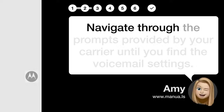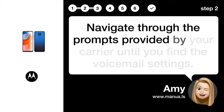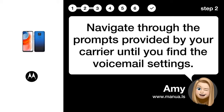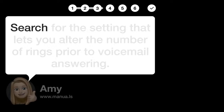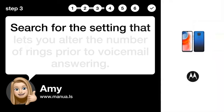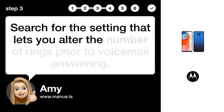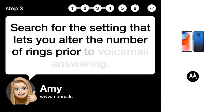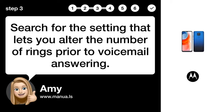Step 2: Find voicemail settings. Navigate through the prompts provided by your carrier until you find the voicemail settings. Step 3: Search ring time. Search for the setting that lets you alter the number of rings prior to voicemail answering.